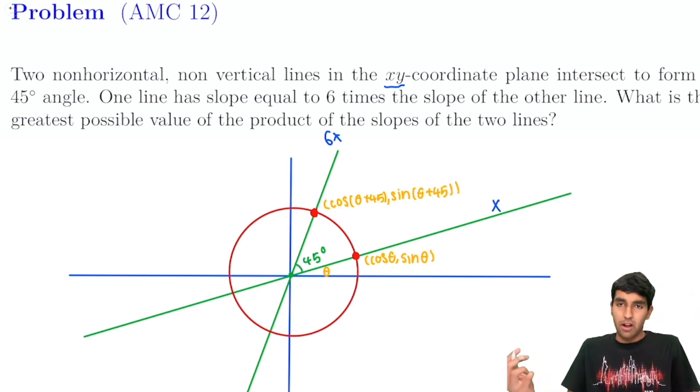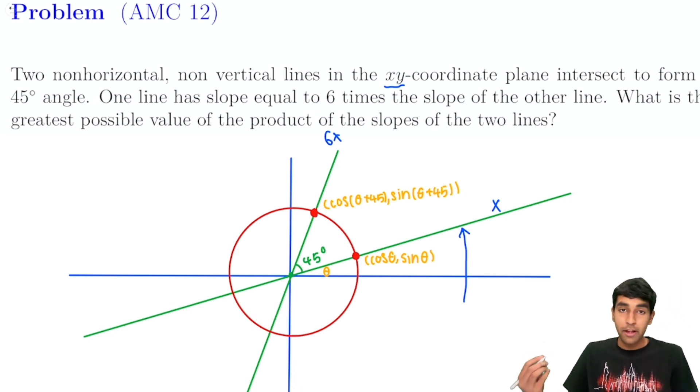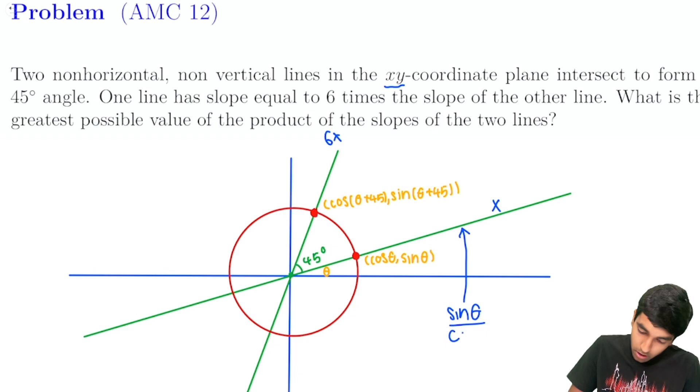So now where do we get slopes from? What is slope at the end of the day? It's rise over run, right? So we look here, we have the change in y over the change in x. For this line over here, we have the slope is going to be sine of theta over cosine of theta. And this is just tan of theta.